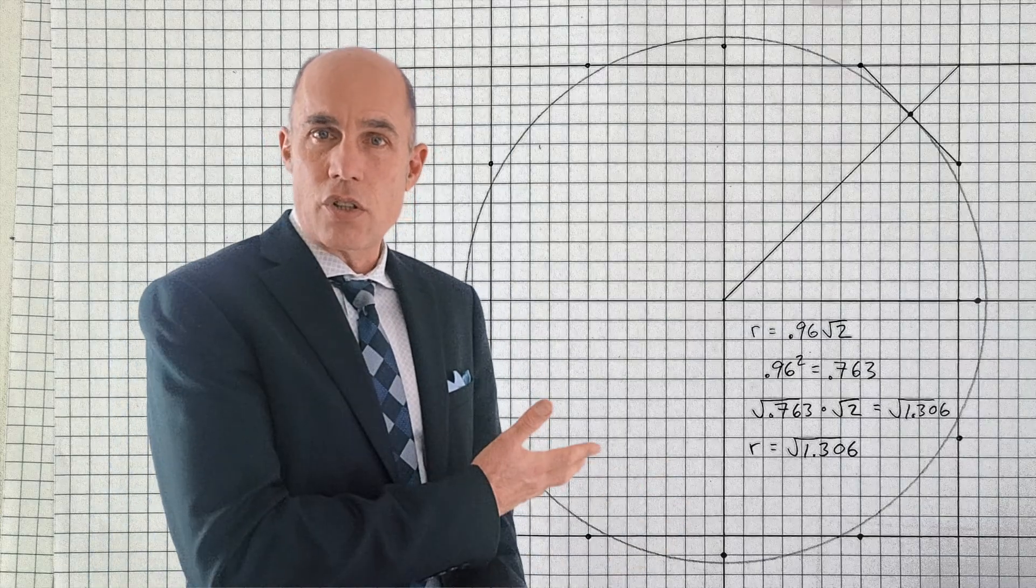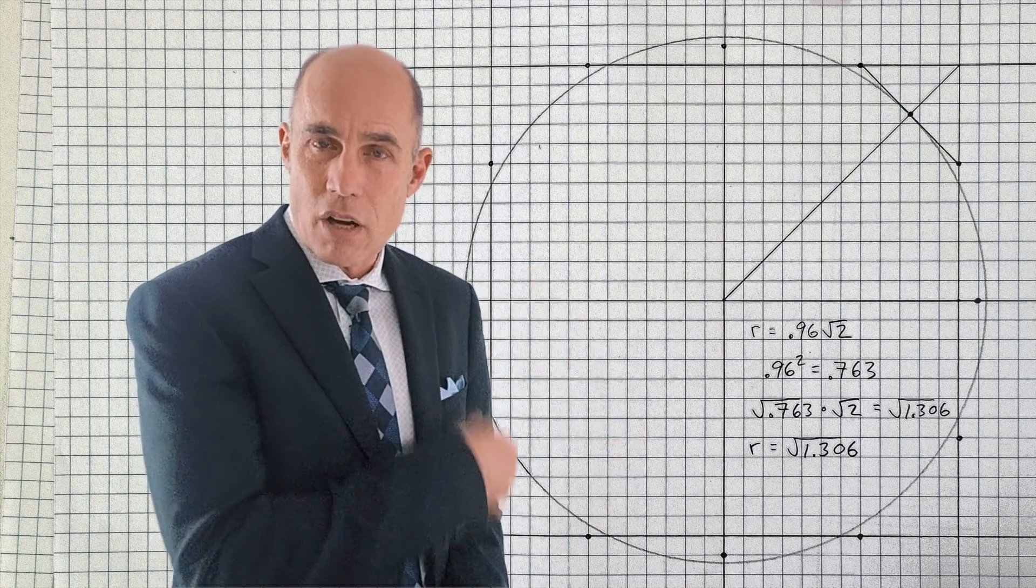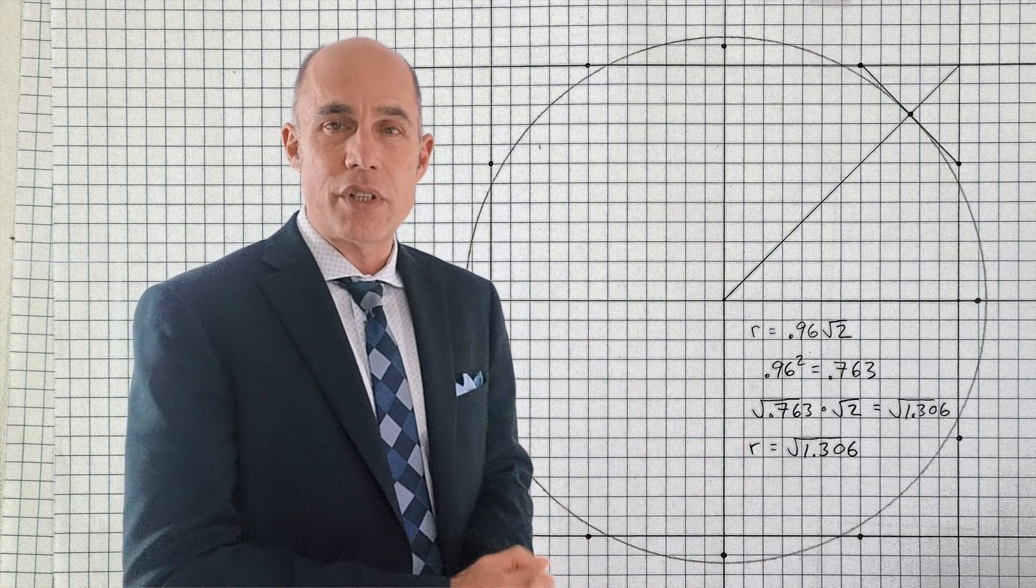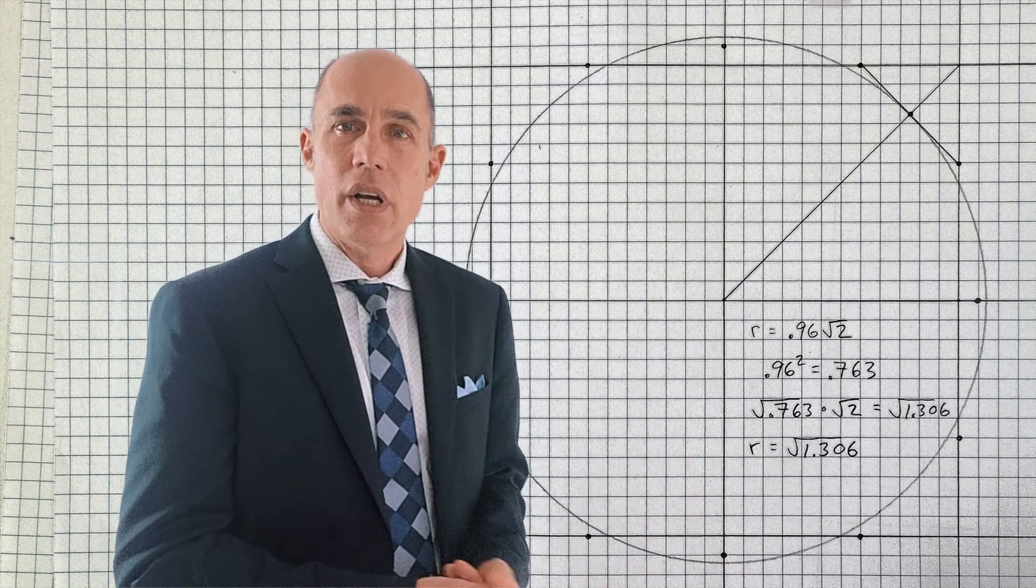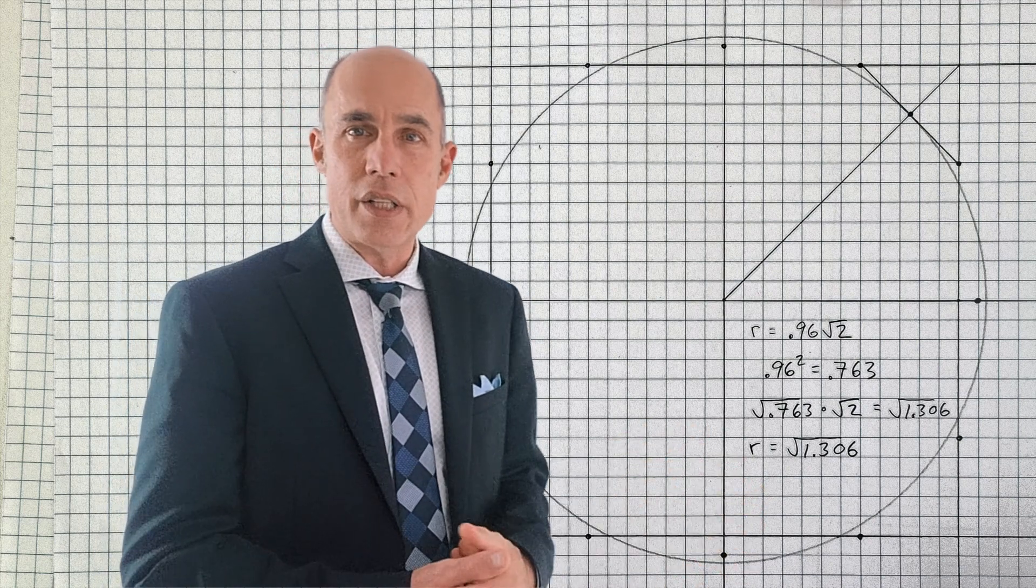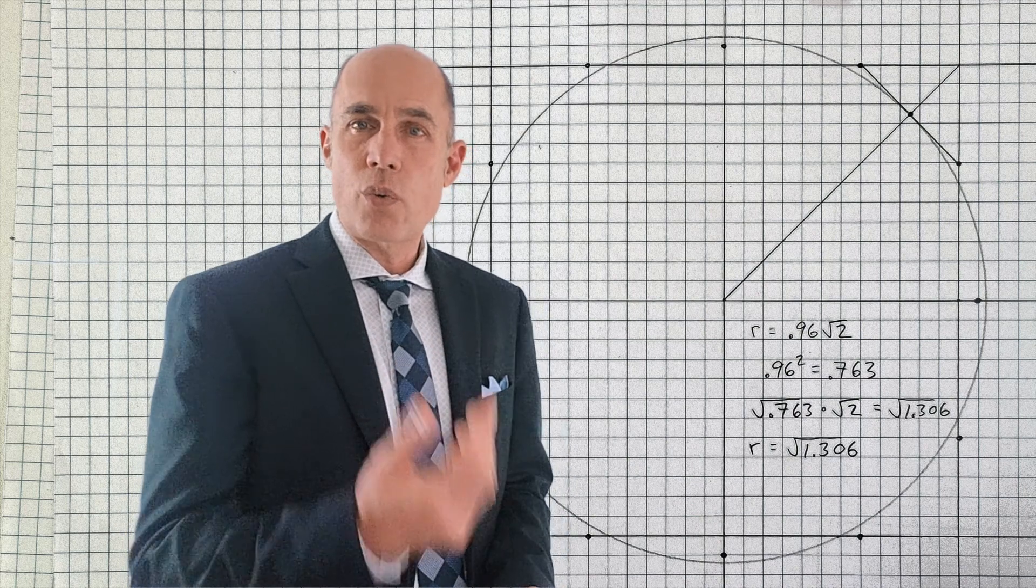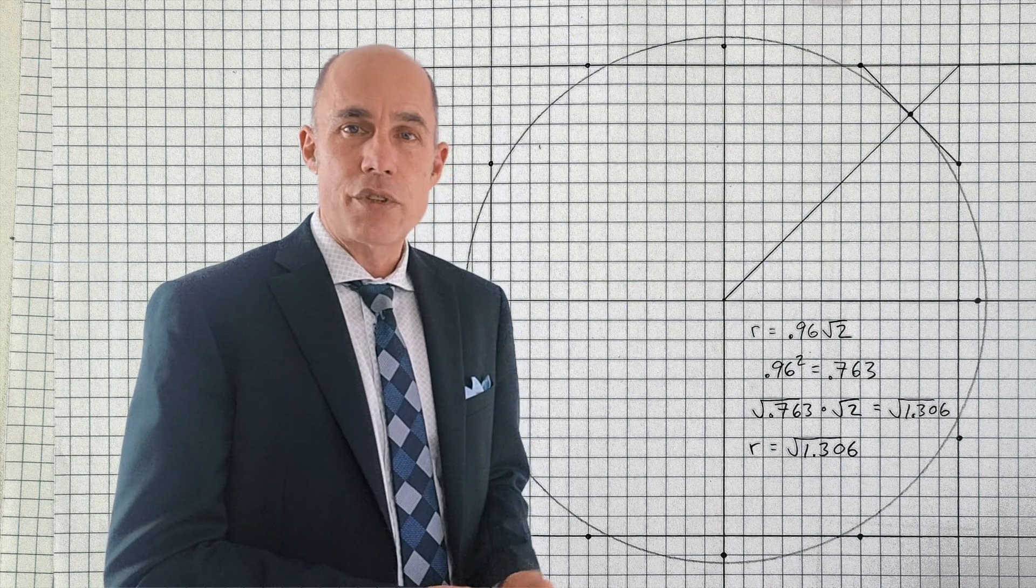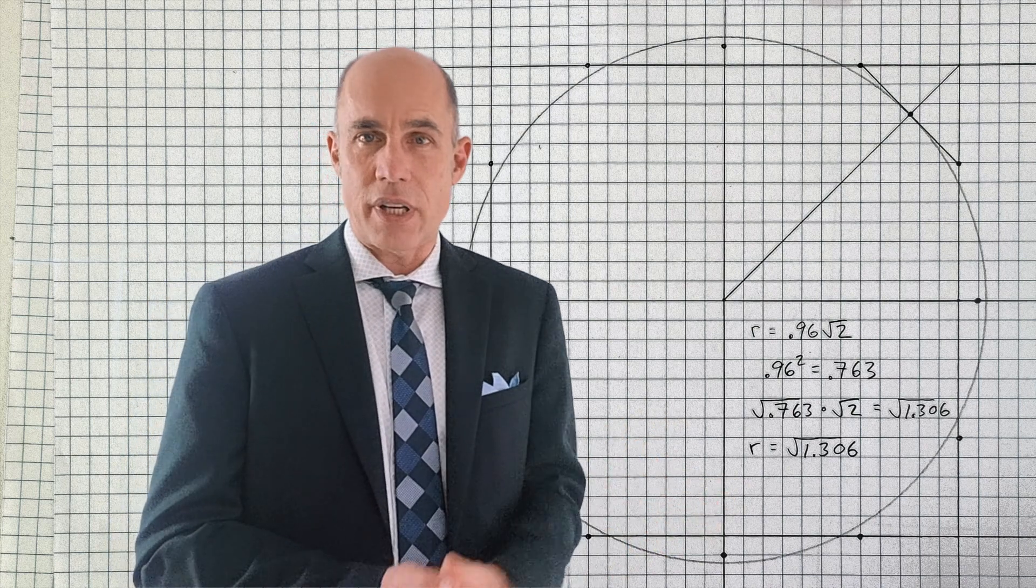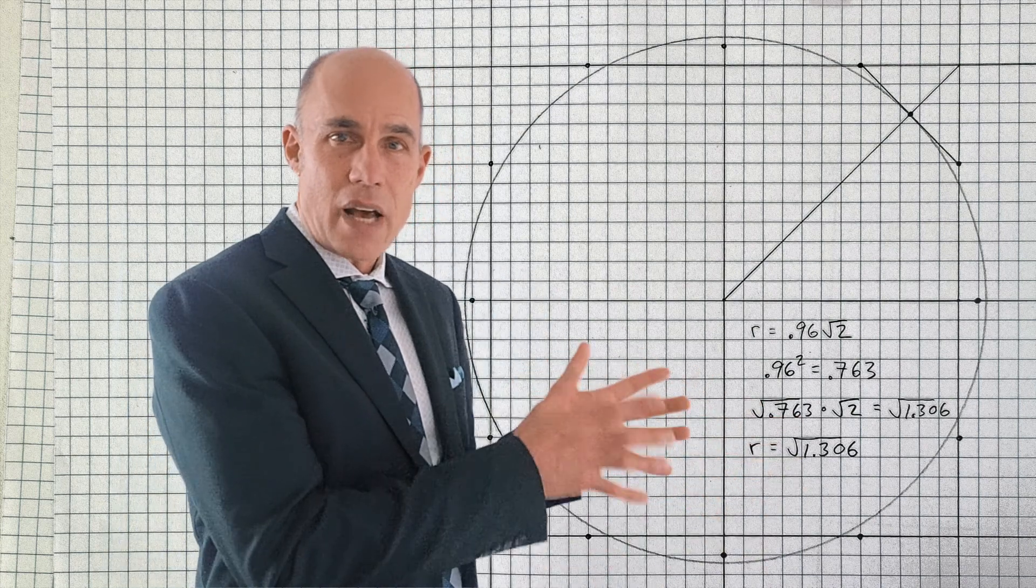So we can see what that circle looks like, how it's basically weaving itself between the other points of the pattern. And we can see the square root version of that number: 0.96 squared is 0.763, so √0.763 times √2 gives the answer √1.306. So that's the radius of that particular circle.